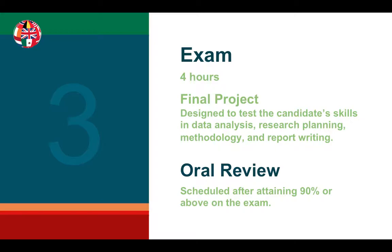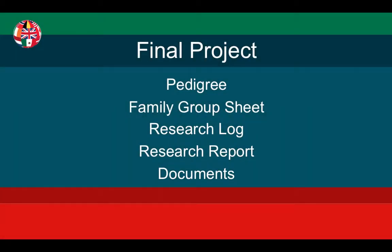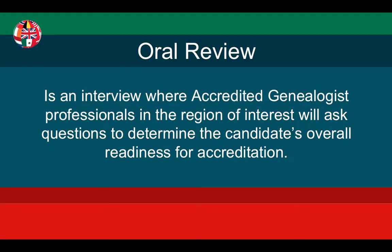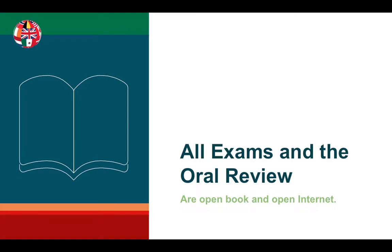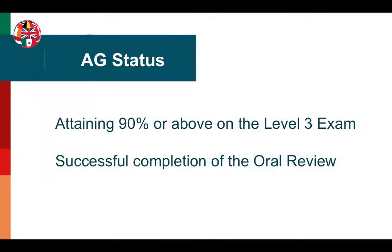The final project is kind of like a mini four-generation project. At the end of your test, you will turn in a pedigree chart, family group sheet, research log, research report, and documents. Once you have passed the Level 3 exam with 90 or above, you'll be scheduled for an oral review. The oral review is an interview where accredited genealogist professionals in the region of your interest ask questions to determine the candidate's overall readiness for accreditation. All exams and the oral review are open book and open internet. AG status is achieved by attaining a score of 90% or above on the Level 3 exam and successful completion of the oral review.